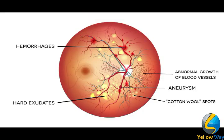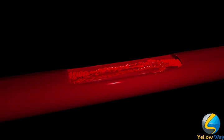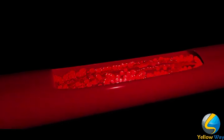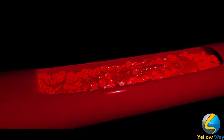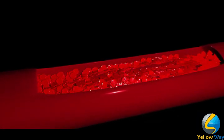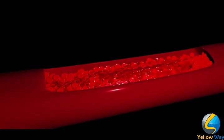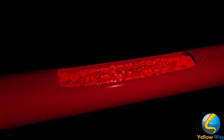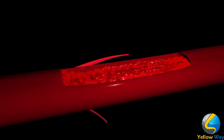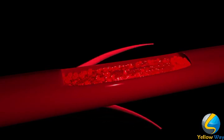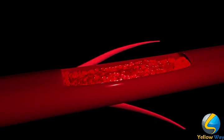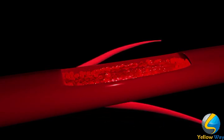As the retinopathy progresses, the perfusion of blood to the retina depletes, causing hypoxia. Thus, the body will release VEGF to stimulate the production of new fragile blood vessels in an attempt to increase oxygen and nutrients to the retina. These fragile blood vessels, known as neovascularization, are more susceptible to breaks and bleeds.